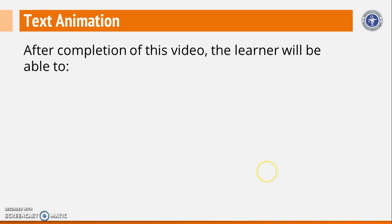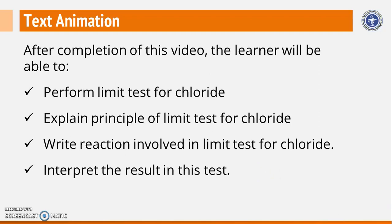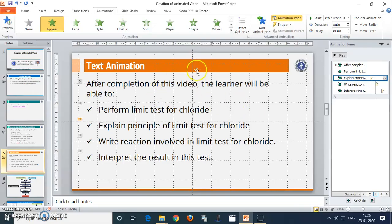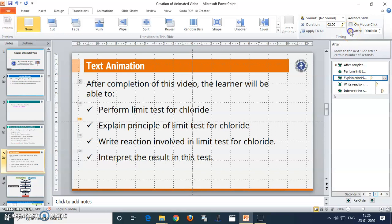Just run the slideshow. See — every sentence comes up automatically. So, while setting this up, you have to record the time — how much time is required to complete the text animation for a particular slide. Once you record the timing, go to the transition options, uncheck 'On Mouse Click', check 'After' and put that particular timing required to complete the animation of that text.